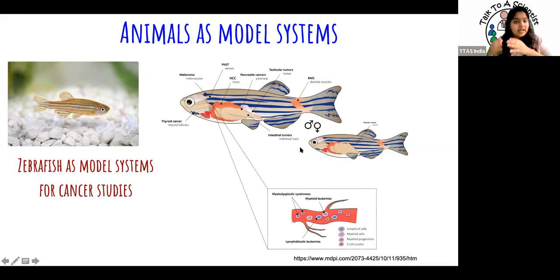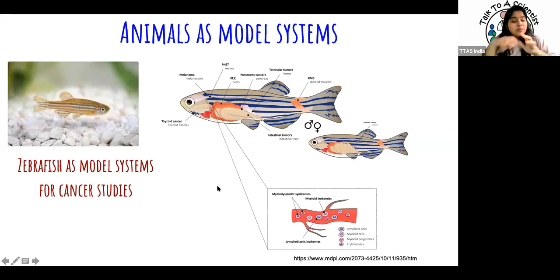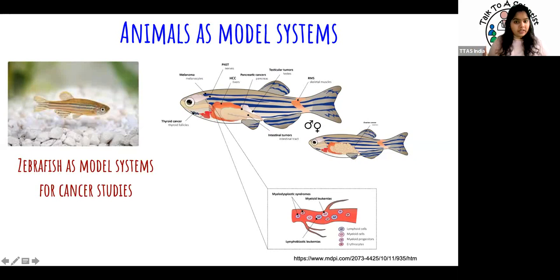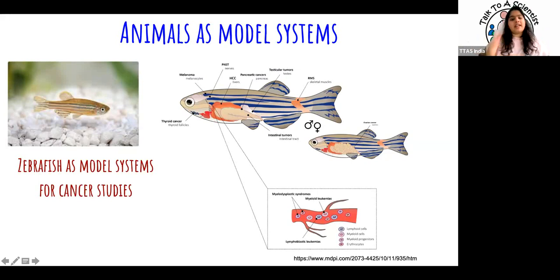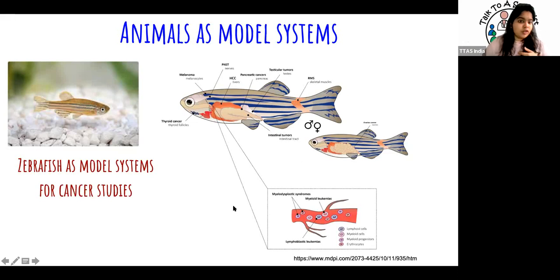Model systems are used because they represent some aspect we want to study very accurately. For example, if you want to study digestion, you'd want a model animal with a digestive system similar to ours. If you want to study the brain, you want an animal whose brain structure is similar to ours — even if their digestive or immune systems differ. An animal model represents one aspect of what we're studying clearly, while other aspects may not be accurate.